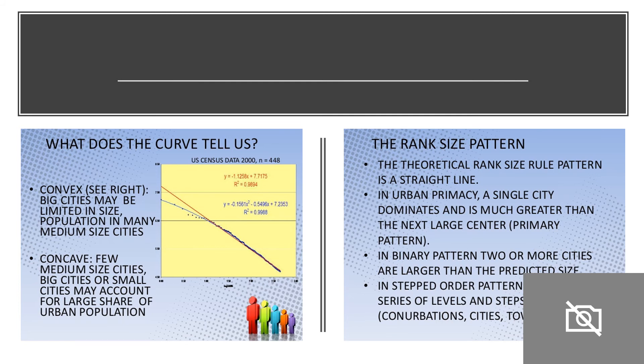The theoretical rank-size rule pattern is a straight line. Urban primacy is represented by a single city, and in a binary pattern, one or more cities are larger than the predicted size.